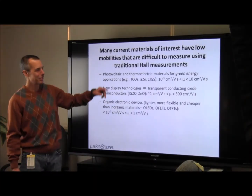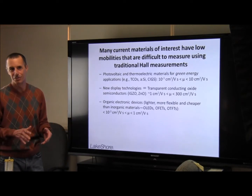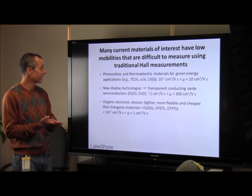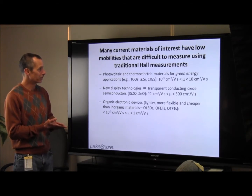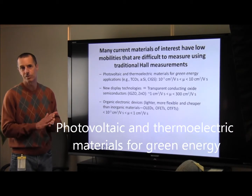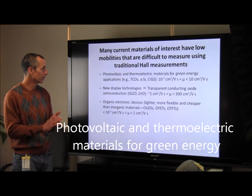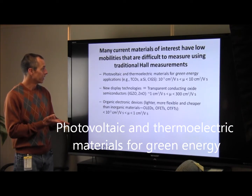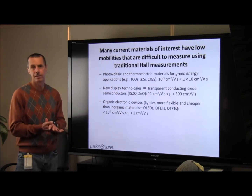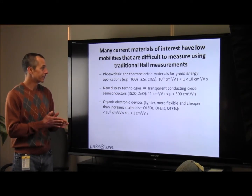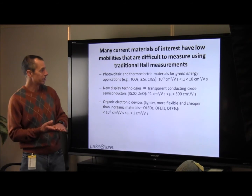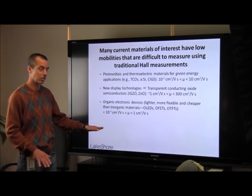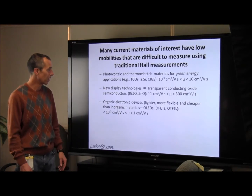Many current materials of interest have very low mobilities that are difficult, if not impossible, to measure using traditional DC field techniques. These include materials for green energy applications such as photovoltaic materials — for example, solar cells — and thermoelectric materials. These include transparent conducting oxides, amorphous silicon, and related materials, which typically have mobilities ranging from about 10 to the minus 3 centimeters squared per volt-second on the low end, up to about 10 on the high end.